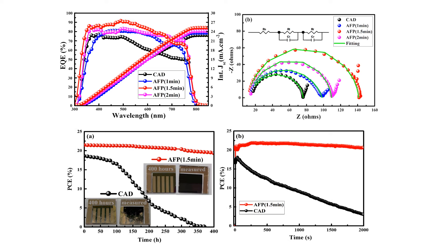From impedance spectroscopy, the thin films prepared with the anti-solvent fumigation process showed a larger first semicircle, which represents the recombination resistance of photogenerated charges. In the case of the anti-solvent fumigation process, the resistance to charge recombination was higher compared to the CAD method.